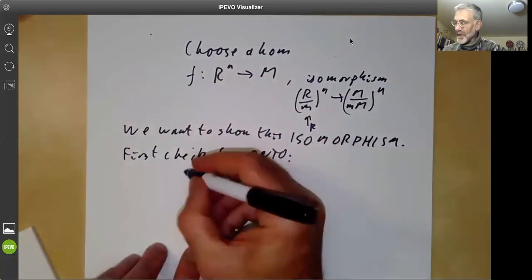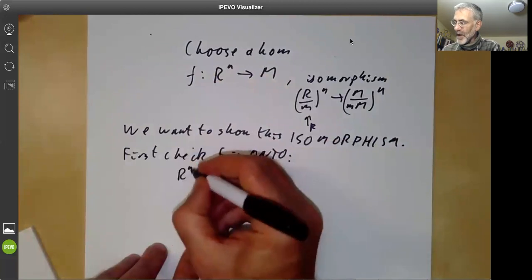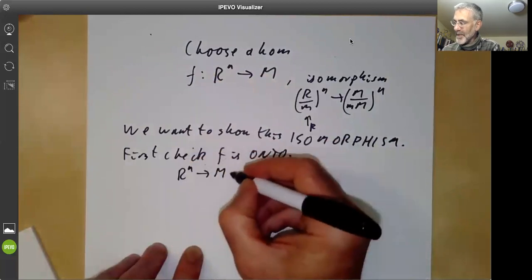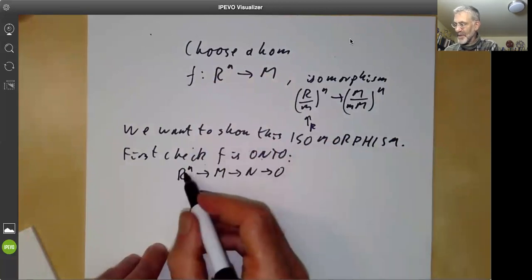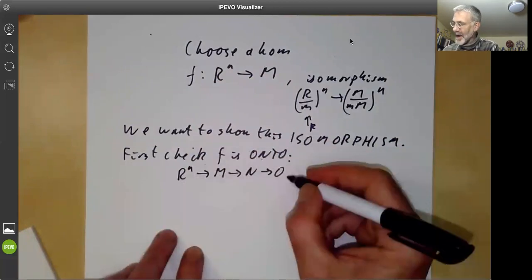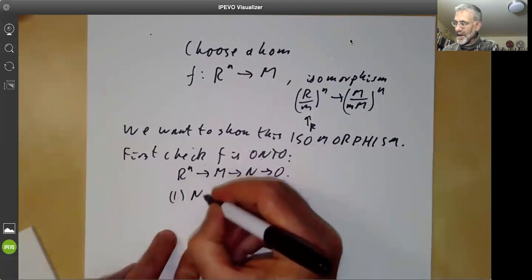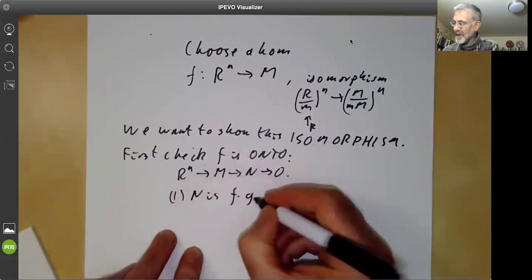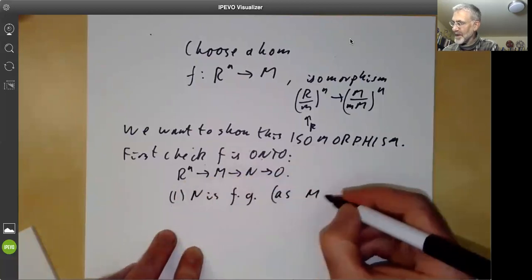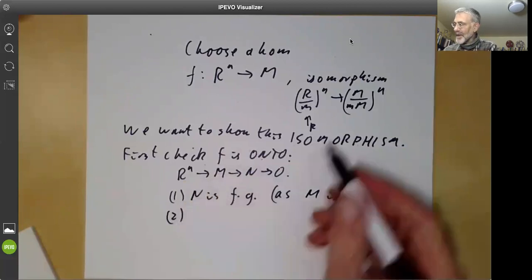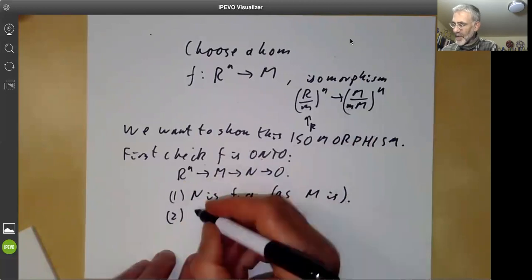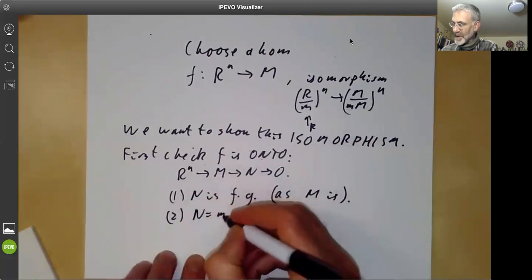Well, now what we do is we put, we've got R to the N goes to M goes to N goes to zero. So N is the quotient of M by the image of R to the N. And then first of all, N is finitely generated because M is. And secondly, you can see that this condition here implies that N is equal to M times N.